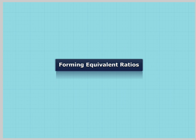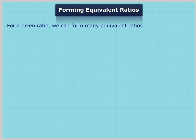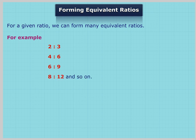Forming Equivalent Ratios: For a given ratio, we can form many equivalent ratios. For example, ratio of 2 to 3, ratio of 4 to 6, ratio of 6 to 9, ratio of 8 to 12, and so on.